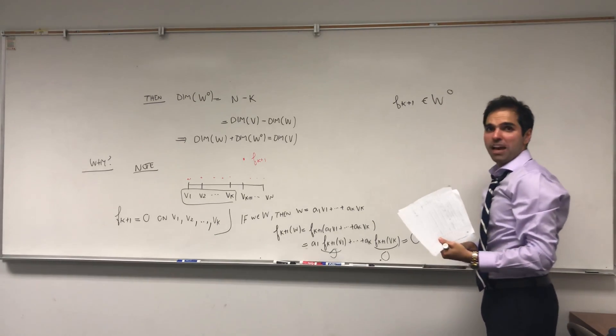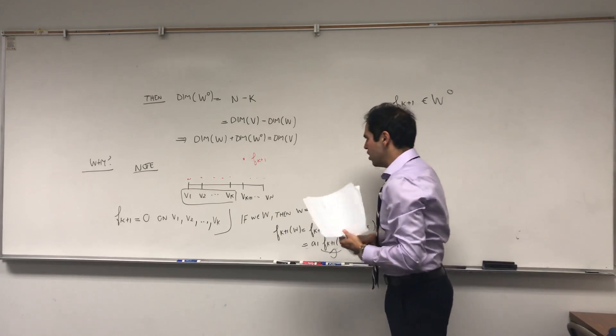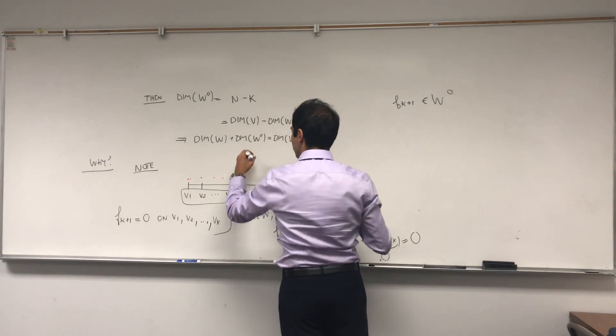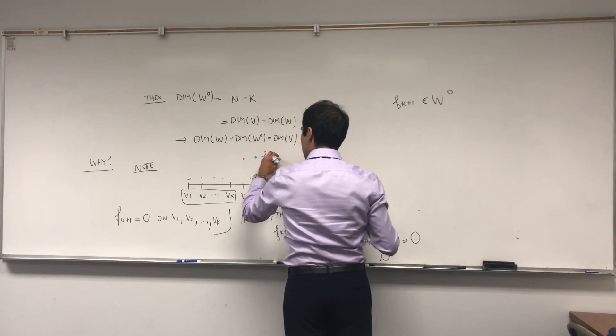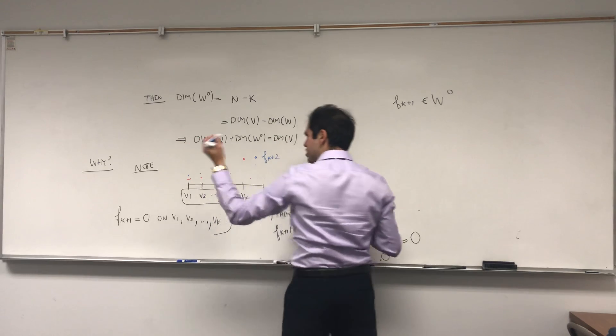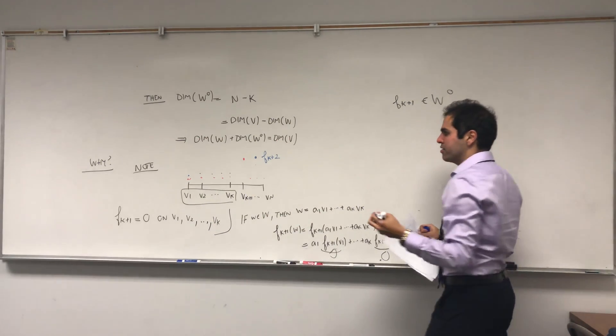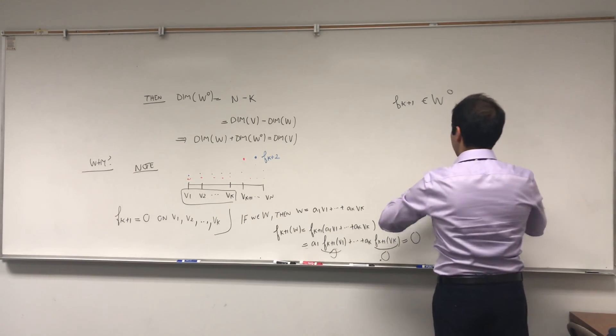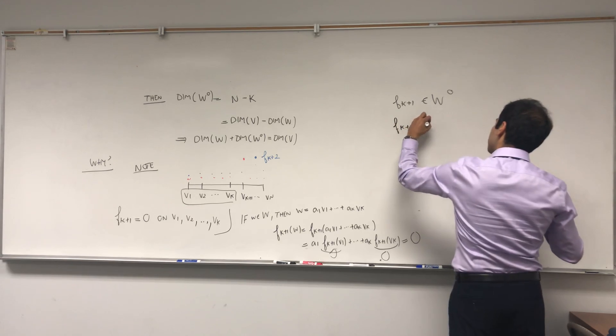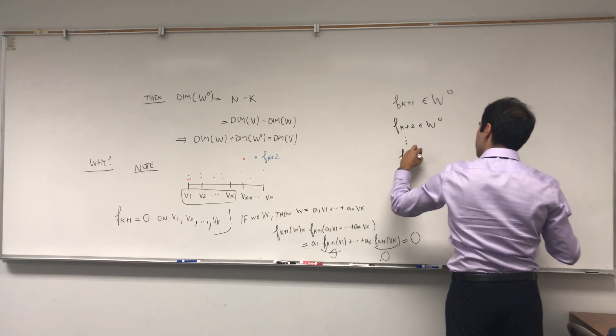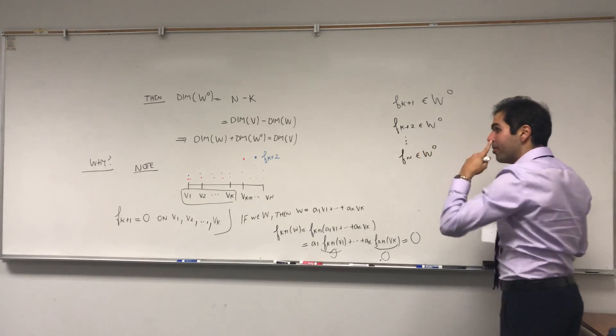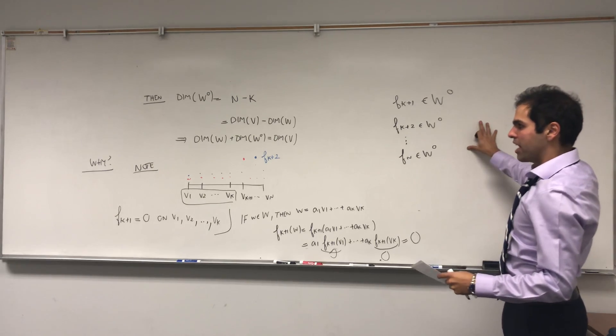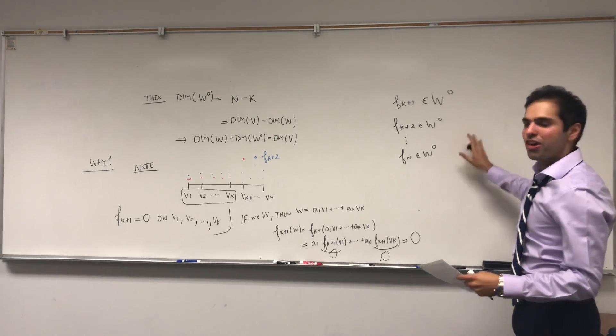So Fk plus one is in w naught. And in fact, there was nothing special about k plus one. Notice the same thing is true for Fk plus two. What does Fk plus two look like, where here it's one? But it's still true that it's zero at the first k vectors. So in particular, also Fk plus two, it's in w naught, and in fact all of them are. So it's important that it really started at this vk plus one. So this settles at least the fact that we have a subset of w naught.